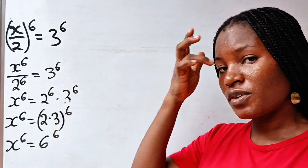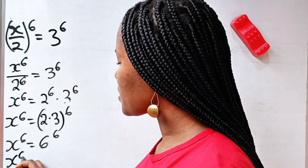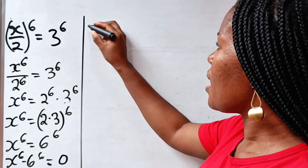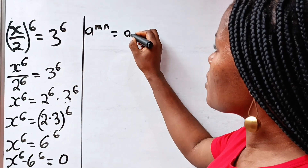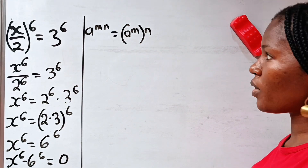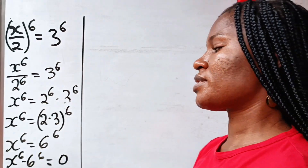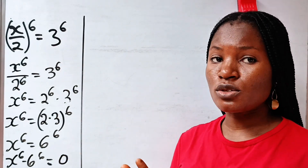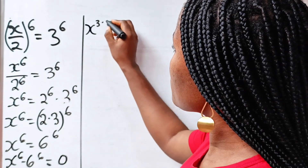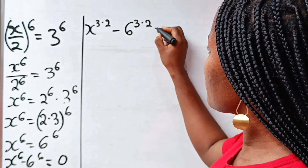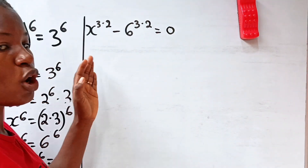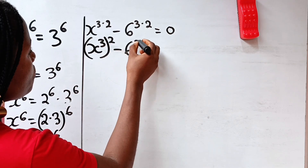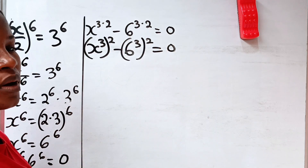Now let's transfer this to the other side of the equation. We have x to the power of 6 minus 6 to the power of 6 is equal to 0. Remember that a to the power of m times n is equal to a to the power of m raised to the power of n. That means 6 can be expressed as 3 multiplied by 2, so we write x to the power of 3 times 2 minus 6 to the power of 3 times 2 is equal to 0. Applying that law, we can write it as x to the power of 3 raised to the power of 2 minus 6 to the power of 3 raised to the power of 2 is equal to 0.